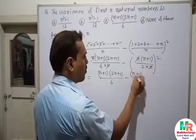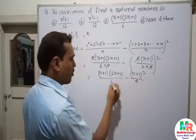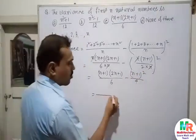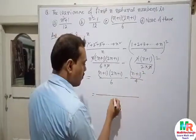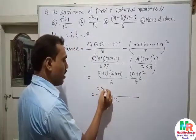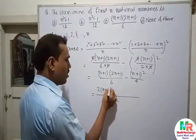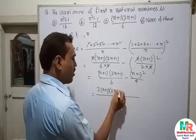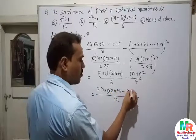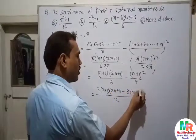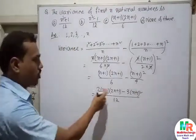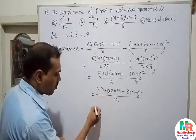Simplifying further: (n+1)(2n+1)/6 minus (n+1)² / 4, taking (n+1) common and simplifying the expression step by step.